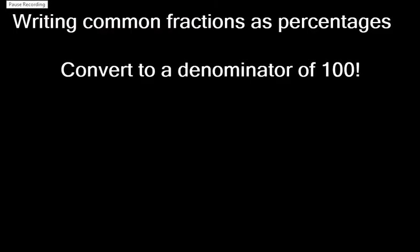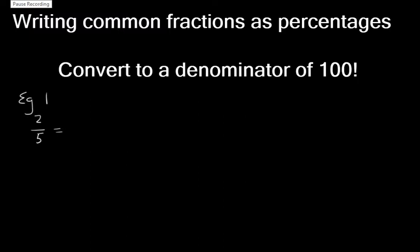Let's discuss writing common fractions as percentages. What's important to know is that when you write down a percentage, the denominator is 100. When they give you a common fraction, we need to convert that to a denominator of 100. Let's say they ask you to write 2 fifths as a percentage. We need to convert to an equivalent fraction over 100.